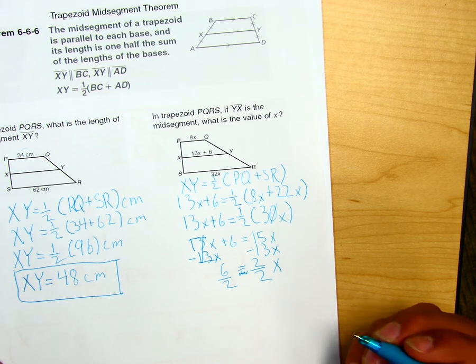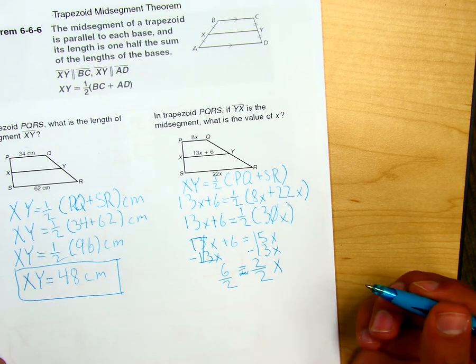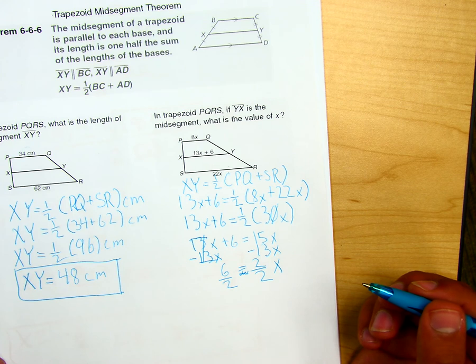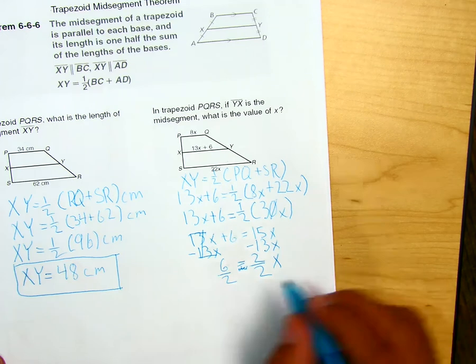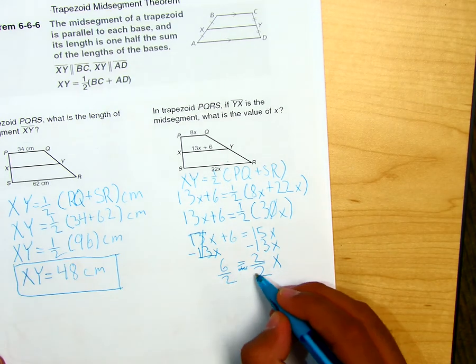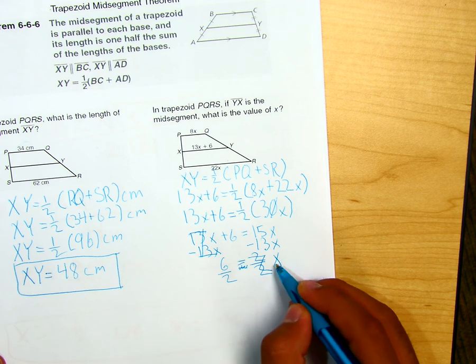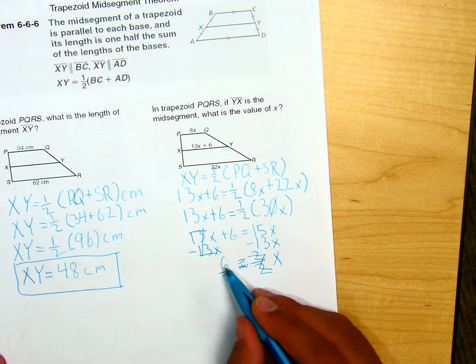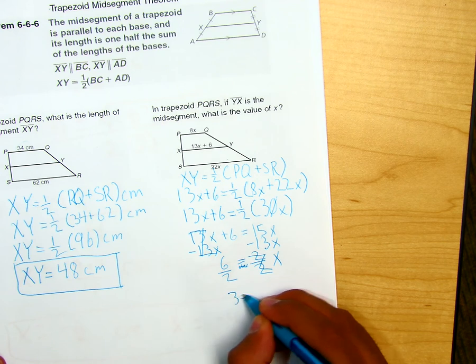How come you have it divided by 2? Because we're getting x by itself. We're going to cancel out and leave the x by itself. Drop that down. But first, make sure you divide the 6 by 2. So it would be 3 equals x.